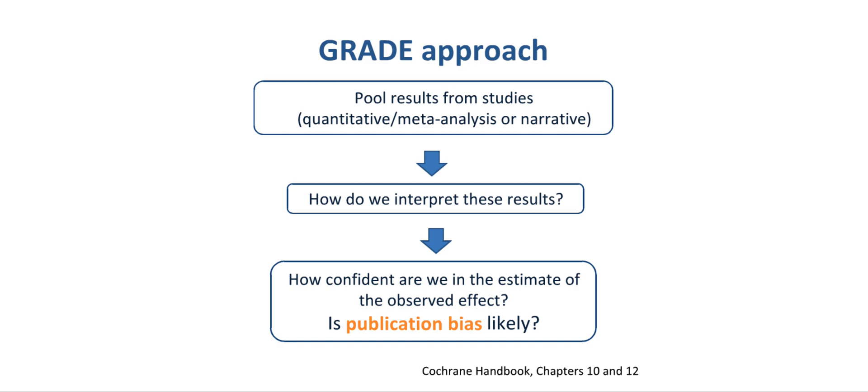One of the questions that is asked according to the GRADE criteria is whether publication bias is likely. If publication bias is likely, our confidence in the estimate of effect may be reduced. For further information on this topic, please see Cochrane Handbook chapters 10 and 12.